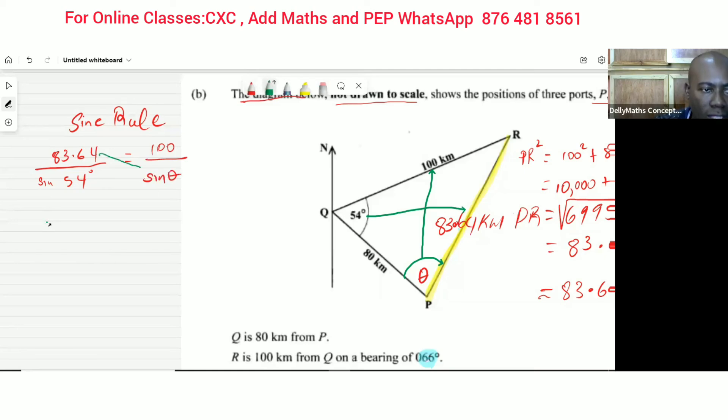We can cross multiply right now. So we could cross multiply easily by saying 83.64 times sine of the angle that we want to find is equal to 100 times the sine of 54 degrees.